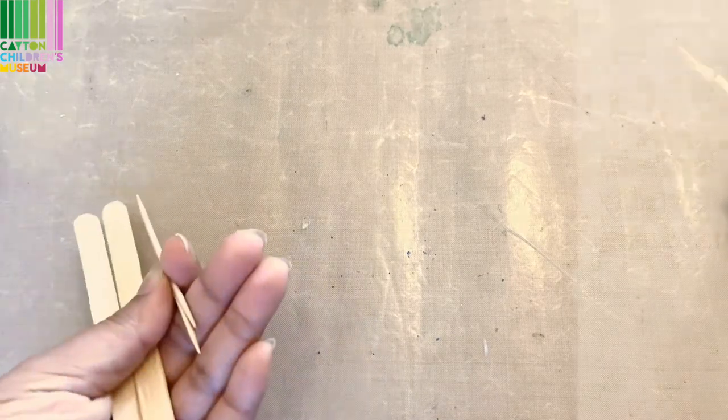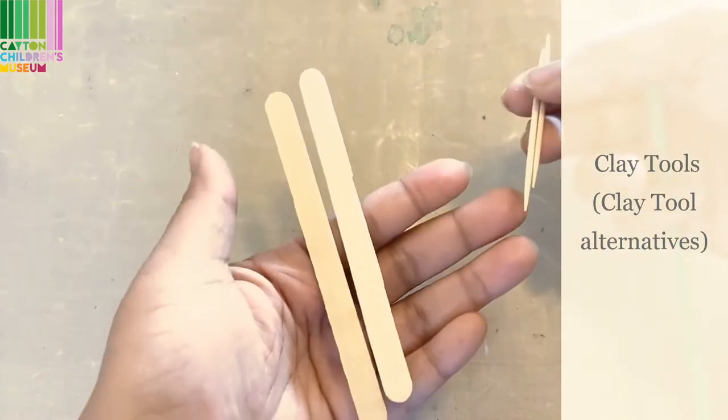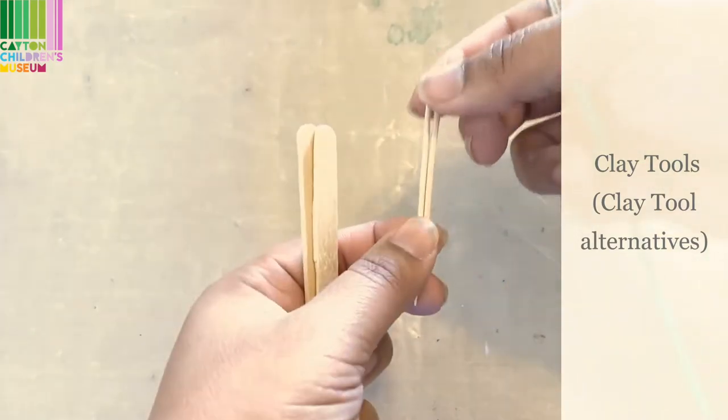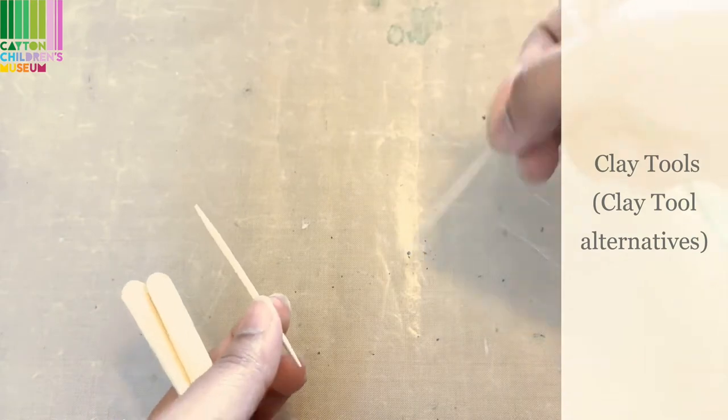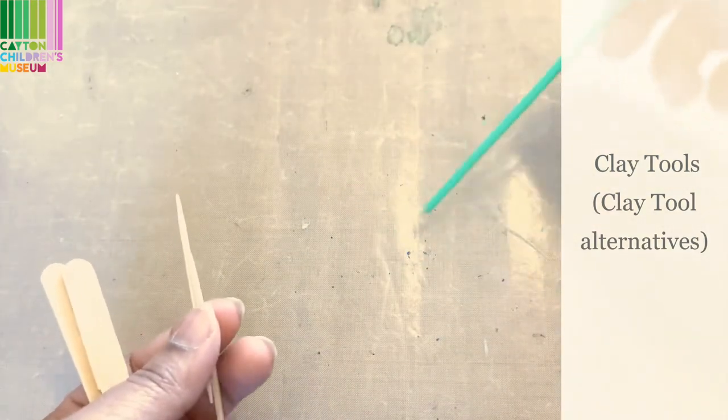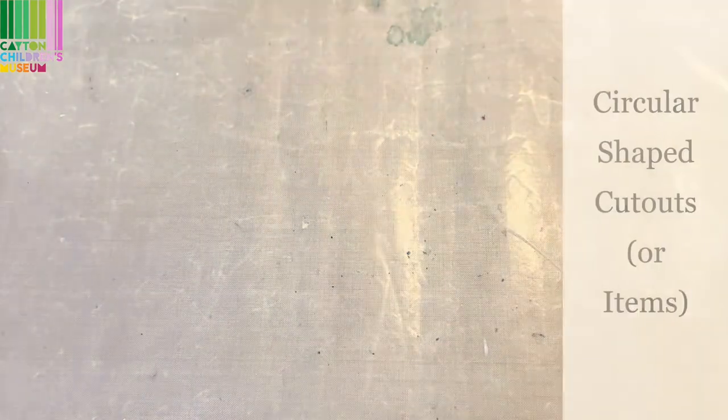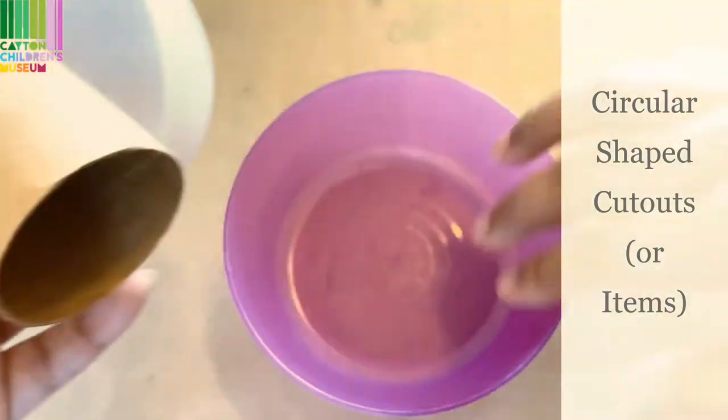You'll also want to grab any kind of clay tools you have on hand. Today I am going to try using some other things. So popsicle sticks for cutting, these toothpicks for drawing and carving and even a brush you can use to create some texture with. I'm also going to use these things to make circles with.